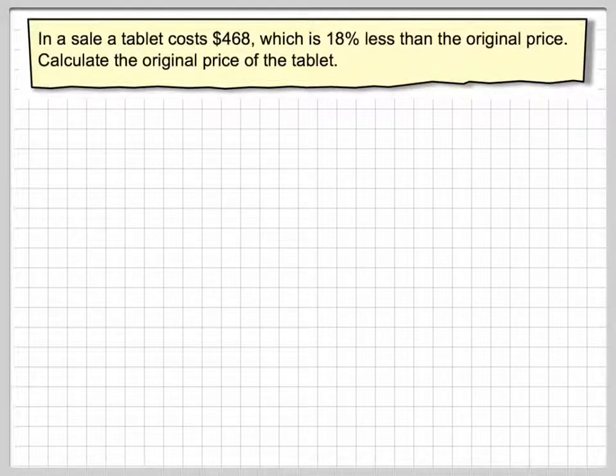All right, this question is like what we call a reverse percentage type question. In a sale, a tablet costs $468, which was 18% less than the original price. Calculate the original price of the tablet.